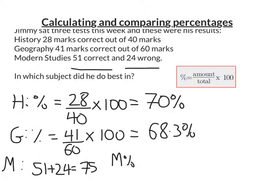So to work out the percentage, I'm going to do how many he got correct over the total number of marks. That's 75 and then times that by 100. And that gives me 68 percent.